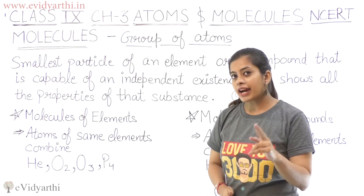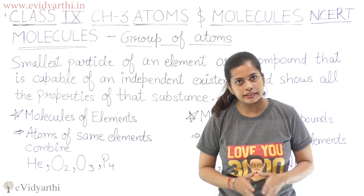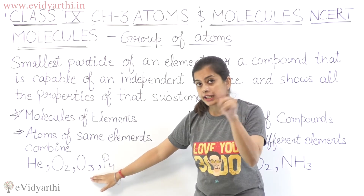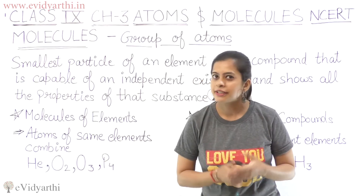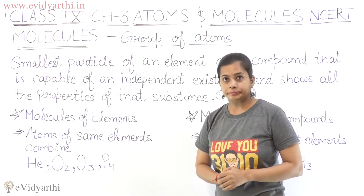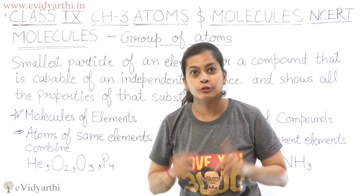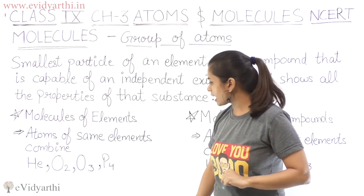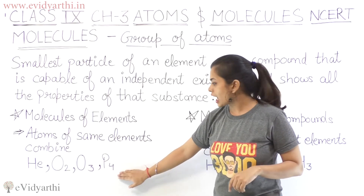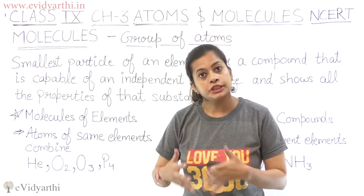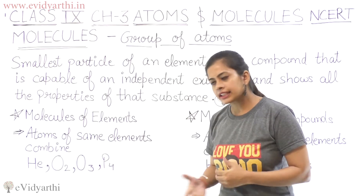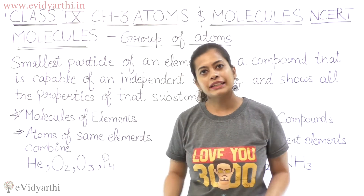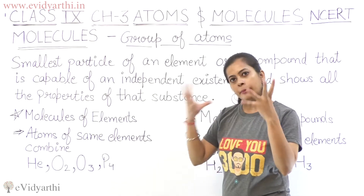Oxygen is a diatomic molecule. And then O3 — oxygen forms a different molecule, and it is ozone. So O3 is triatomic. Then comes phosphorus, which has four atoms and is known as tetraatomic. If the number of atoms increases further, we call them polyatomic — 'poly' means many.